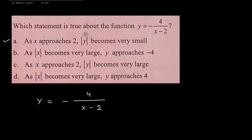First question is which statement is true about the function y equal to minus 4 divided by x minus 2. Here as x approaches 2, the denominator will become 0 and as denominator becomes 0, the y will become minus infinity.